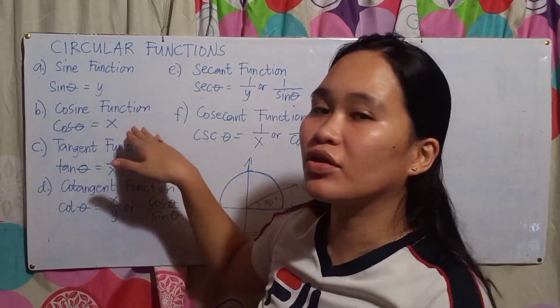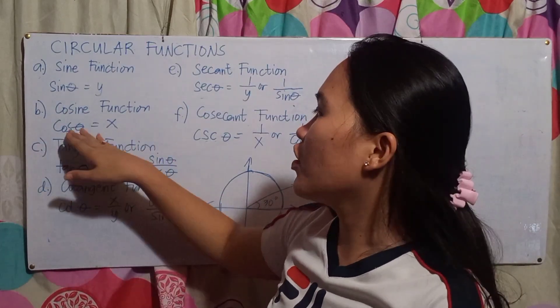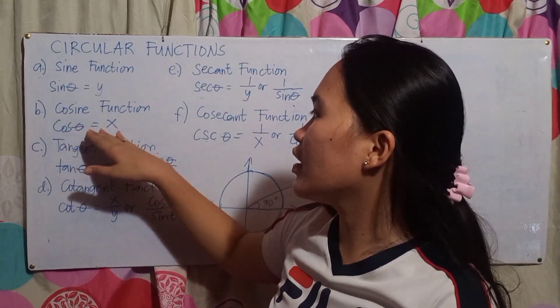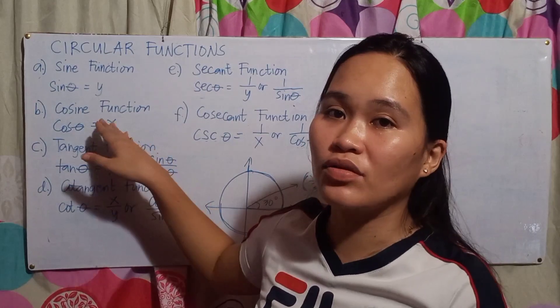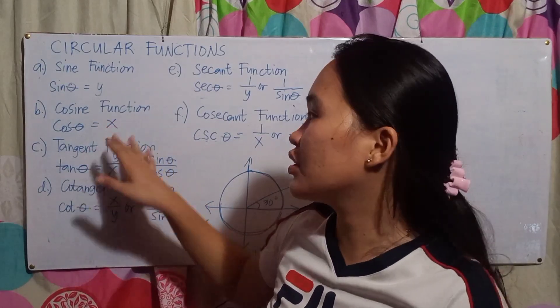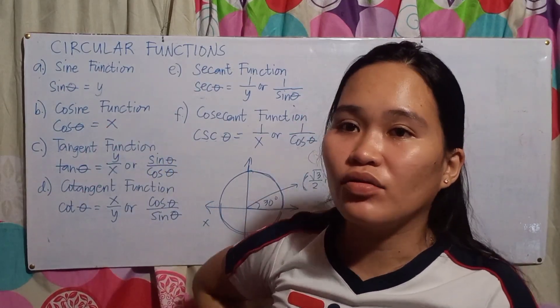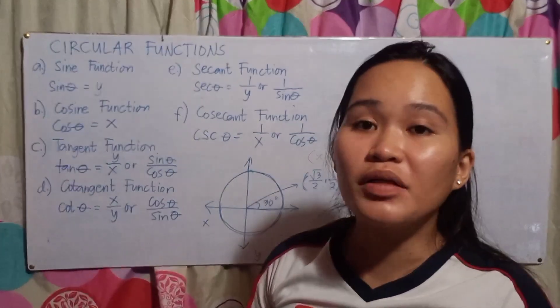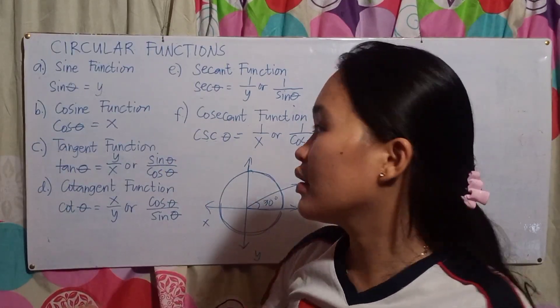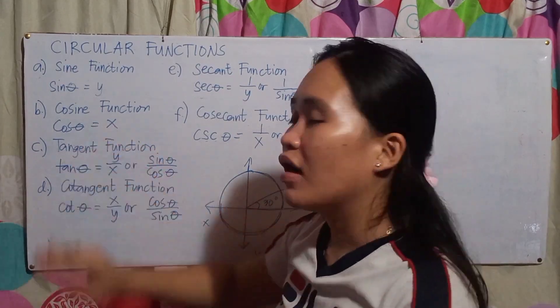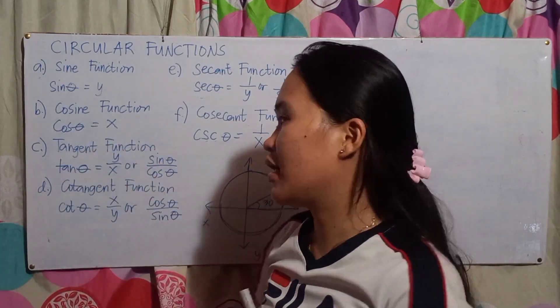Next, the cosine function: cos theta equals x. So it represents the x value — the x value of the ordered pair.